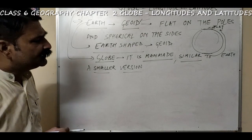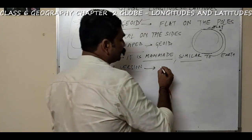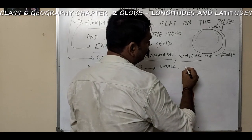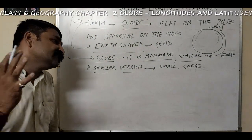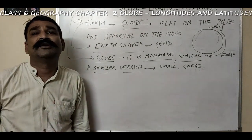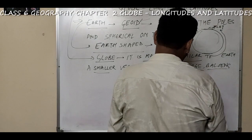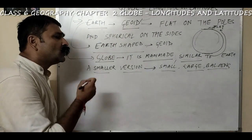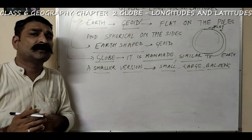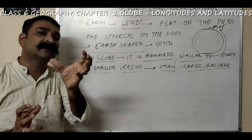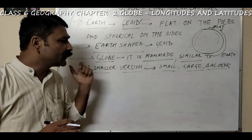There are many types of globes which you can buy or which are available in the market. Some globes are small, there are large globes also, and there are some globes which are in the form of balloons. The advantages of a globe are that it gives us an idea of how the earth looks, and where the continents, oceans, or a particular country is located.